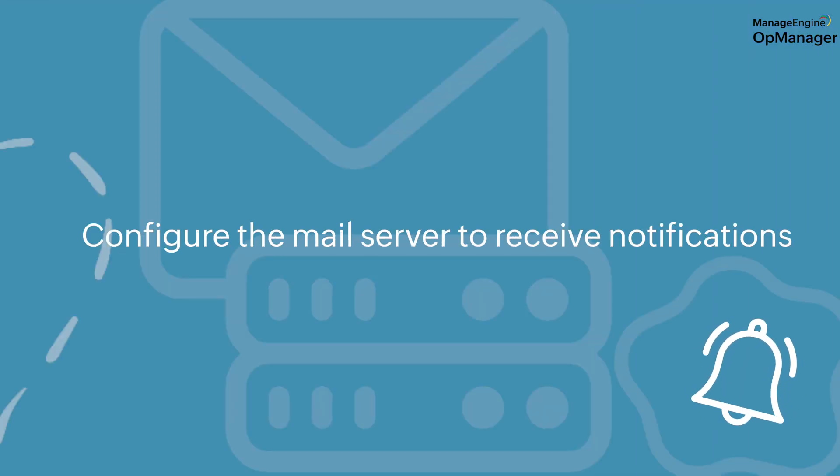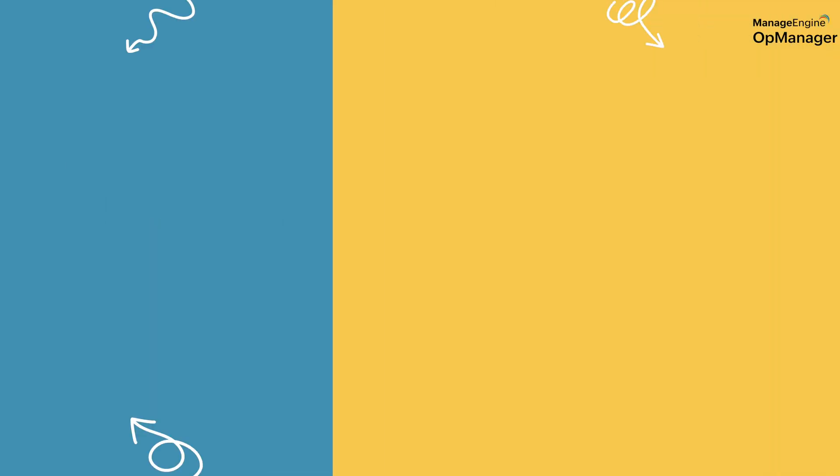When the installation is completed, all you have to do now is configure your OpManager build the way you want to use it — tailor it to your needs. You could begin with providing your mail server details to start receiving alerts about your network devices.